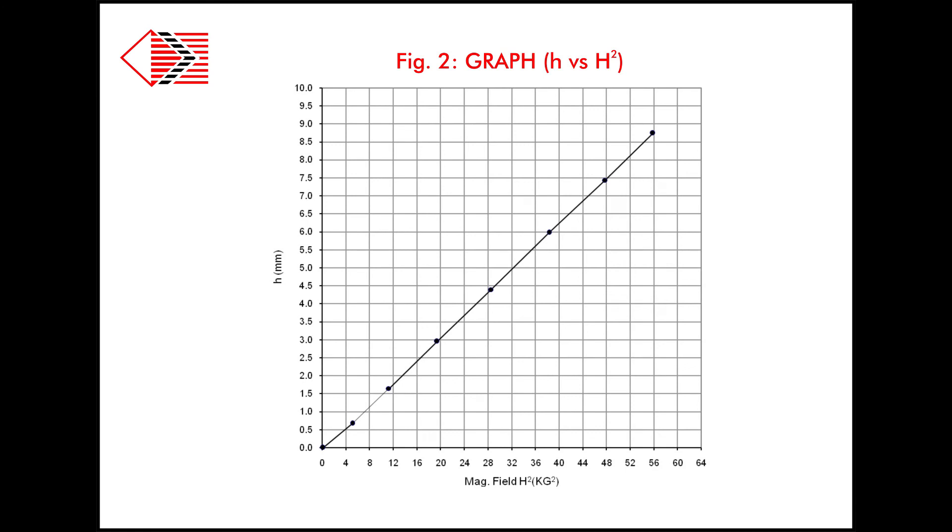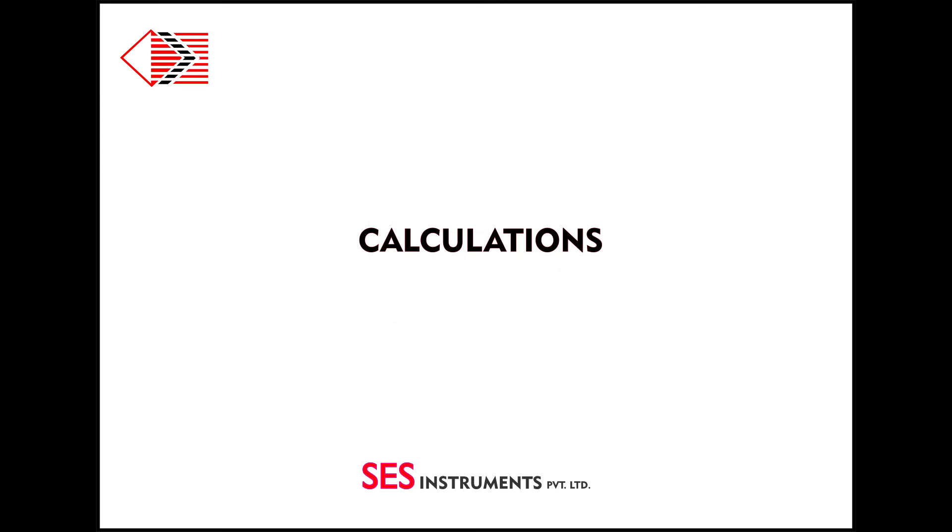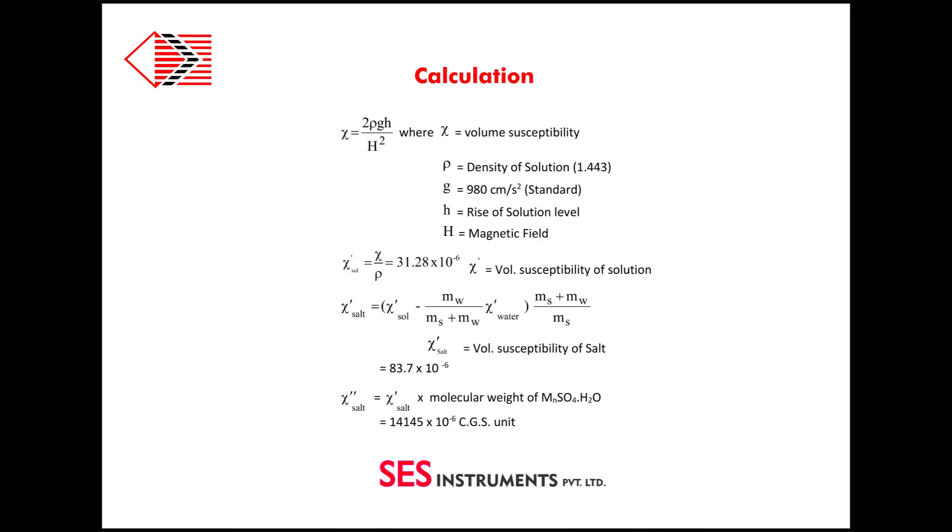Plot a graph between h and H square as shown in figure. From graph, we will get value of h upon H square equal to 15.96 into 10 to the power minus 9. Putting this value in formula, we can calculate the value of volume susceptibility of our given sample magnesium sulphate.